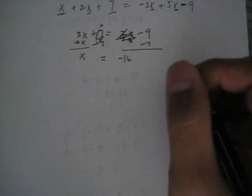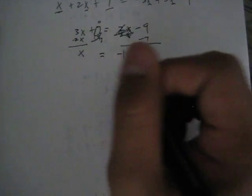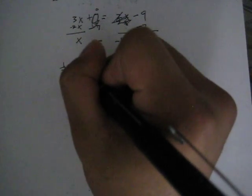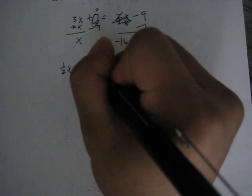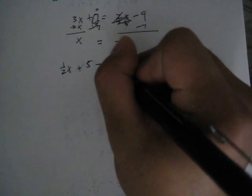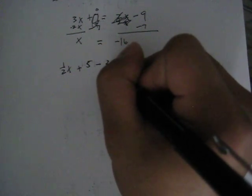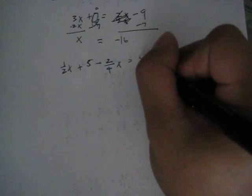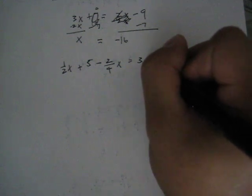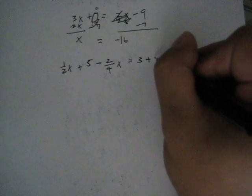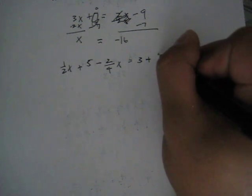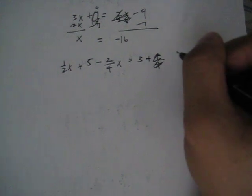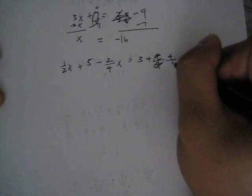Pretty simple, right? Let's try something harder. Let's try throwing in some fractions. If I have 1/2x + 5 - 2/4x = 3 + 4/8x.